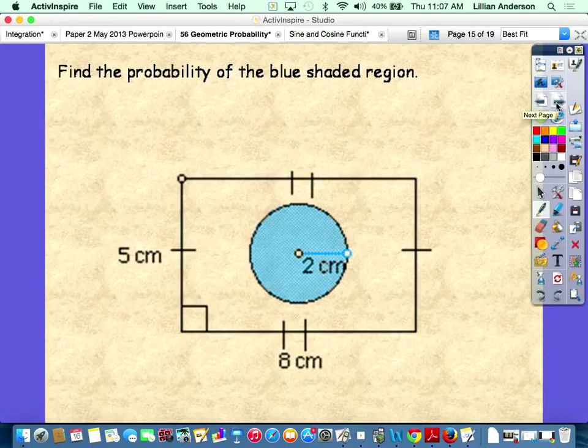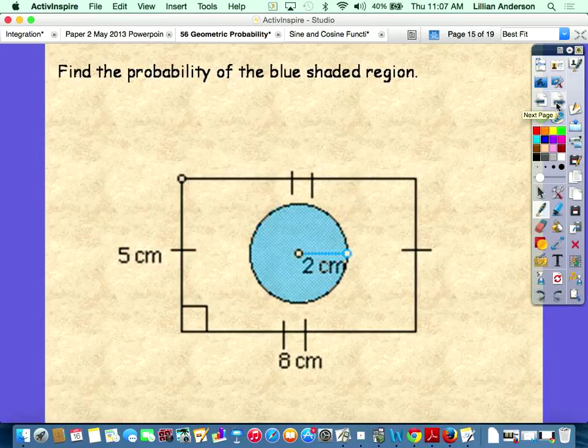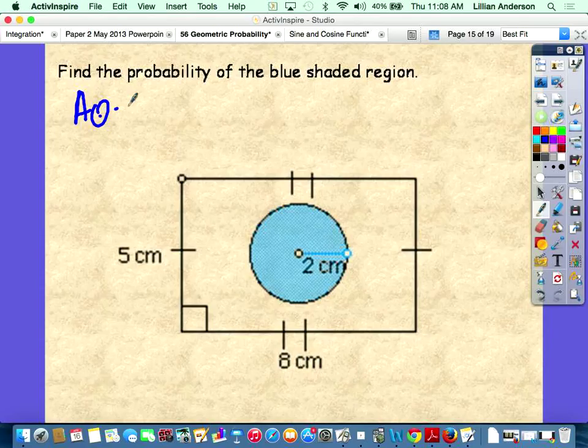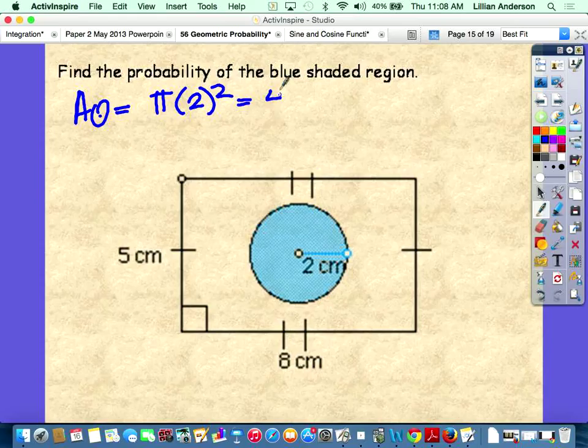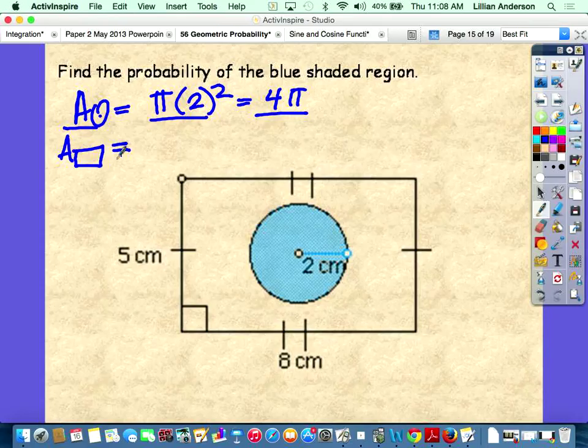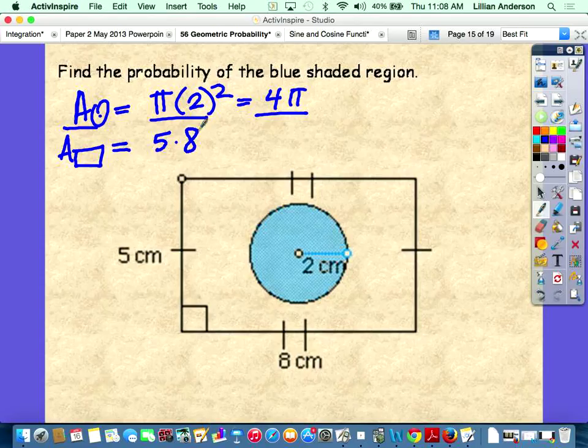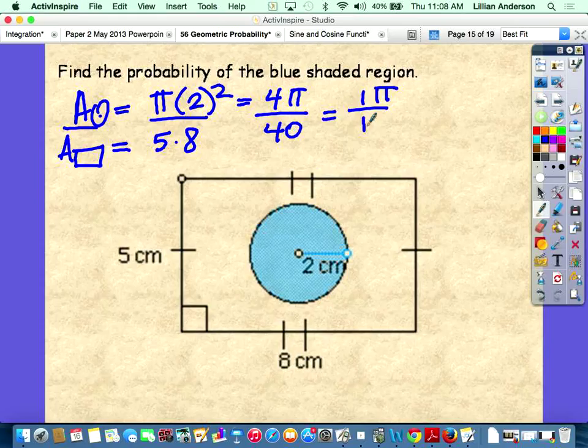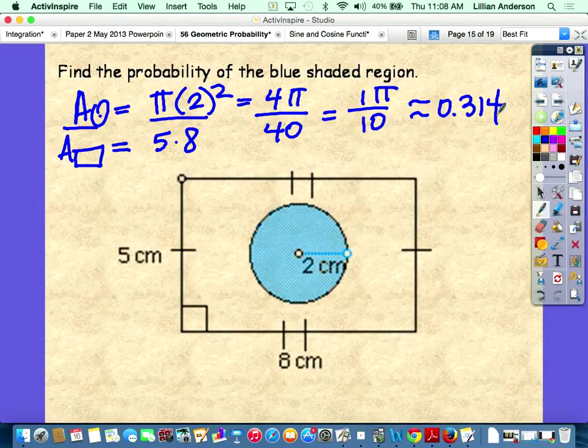Find the probability of the blue shaded region. The blue shaded region is the shape of a circle. We have to find the area of the circle, which is pi r squared. What's the radius? 2. So pi times 4 is 4 pi. Then I have to divide it by the area of the rectangle, which is 40, because you do base times height. I can reduce this, because 4 goes into 40. 1 pi over 10. What's the probability of that? Pi is a number, so just do pi divided by 10.